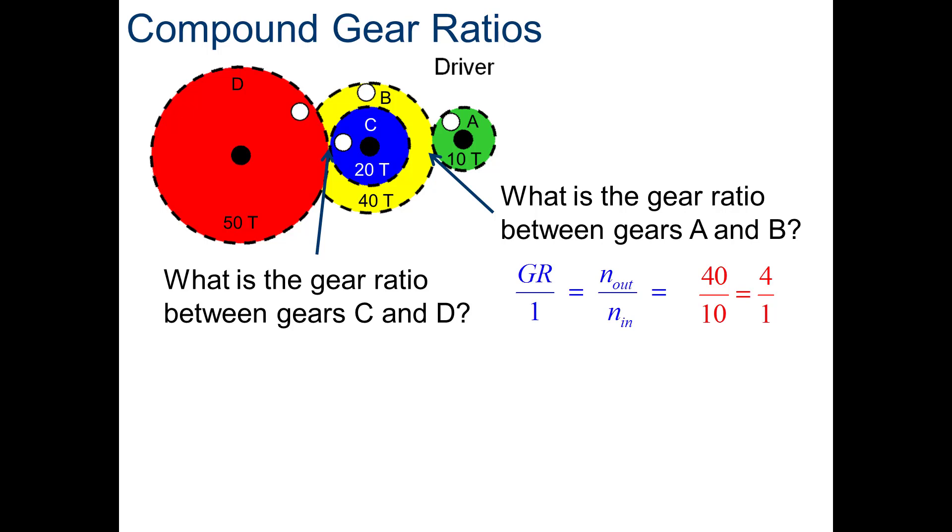Now, we look at the gear ratio between C and D because C mates with D. B and C share a shaft carrying the same angular velocity. Therefore, there is no gear ratio calculation between B and C, only between A and B and C and D. So, go ahead and calculate the gear ratio between C and D. You should have gotten 2.5 to 1.